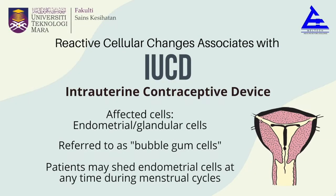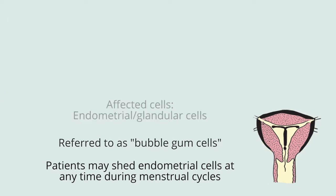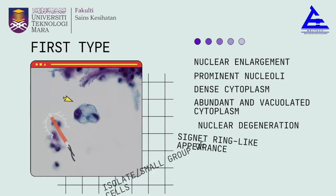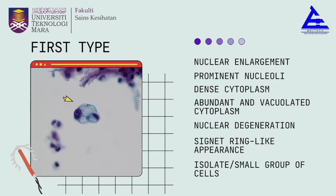For reactive cellular changes associated with IUCD, the affected cells are endometrial or glandular cells, also referred to as bubble gum cells. Patients may shed endometrial cells at any time during the menstrual cycle. For the first type of IUCD, characteristics include nuclear enlargement, prominent nucleoli, dense cytoplasm, abundant and vacuolated cytoplasm, nuclear degeneration, signet ring-like appearance, and presence of isolated or small groups of cells.